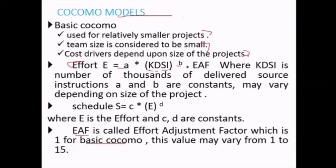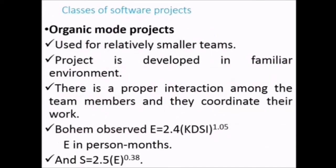The EAF values vary from 1 to 15, determined by certain questions asked about the project. For organic mode projects — used for relatively smaller teams in a familiar environment with proper team coordination — Boehm observed E = 2.4 × KDSI^1.05 (E in person months) and schedule S = 2.5 × E^0.38.